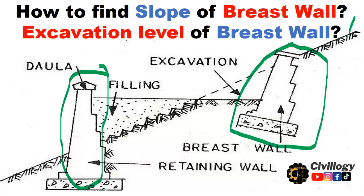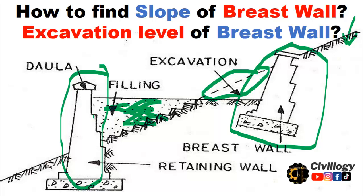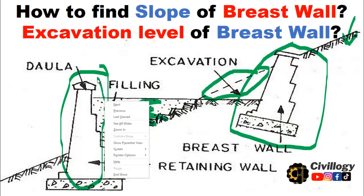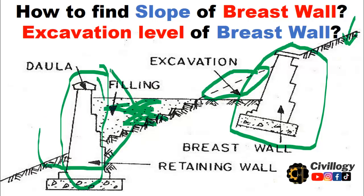To understand the difference between retaining wall and breast wall, just remember that the wall constructed on a hillside — on a hillside or cutting or excavated site — is a breast wall. On the other hand, the wall constructed to retain filling material is termed as retaining wall. As you can see here, this is the fill material, and to retain this filling material the wall constructed is called a retaining wall.